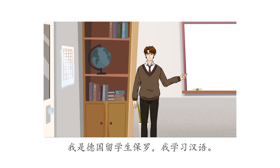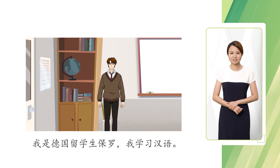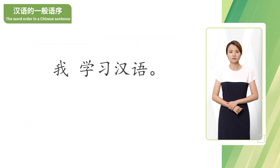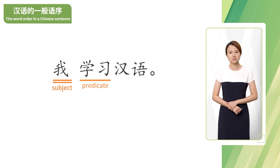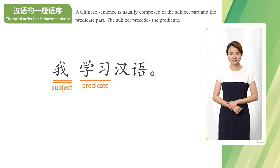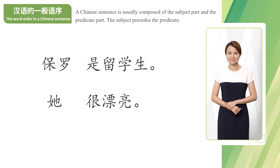我学习汉语。我 is the subject. 学习 is the predicate. A Chinese sentence is usually composed of the subject part and the predicate part. The subject precedes the predicate. Let's look at a few more sentences.